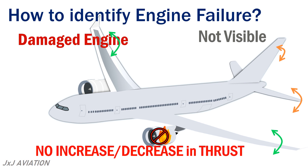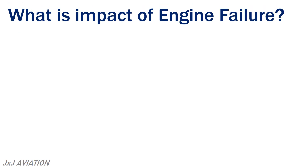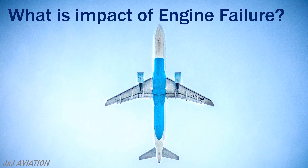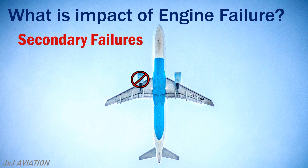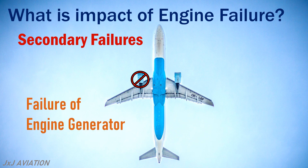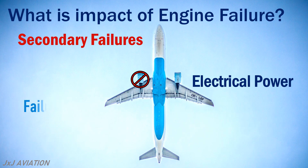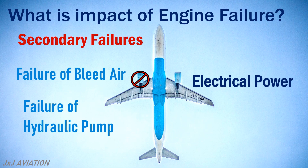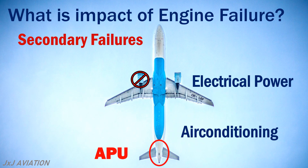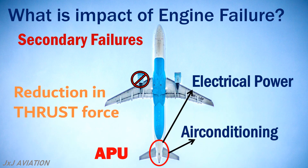Now let's look at some other impacts on an aircraft due to an engine failure. Because of an engine failure there will be secondary failures such as failure of the engine generators which provide electrical power, failure of the hydraulic pumps, and failure of the bleed air supply to the air conditioning system. The APU may be used to supply electrical power and bleed air. But the biggest impact is the reduction in thrust force, so the thrust produced by the live engine should be increased to ensure the aircraft continues flying at a safe altitude.